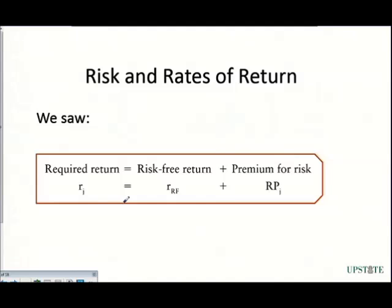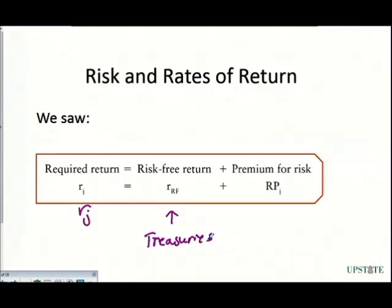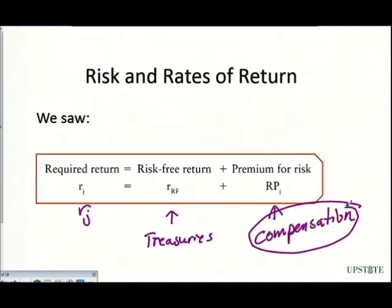This section we're going to be talking about risk and the required rates of return on specific investments. Previously we had seen this equation, which says that the required return R on the J security is equal to the risk-free rate. We know that risk-free rate is given by U.S. Treasuries — there's no default risk on them, the federal government is going to pay those back. Then we have this premium for risk, which is our compensation. That risk premium is what we're going into today — how we figure out what this compensation number is.